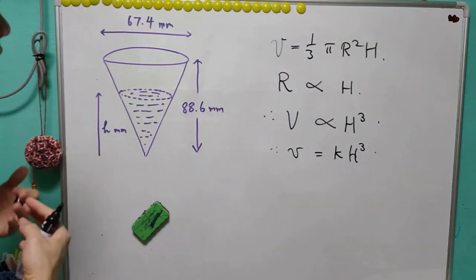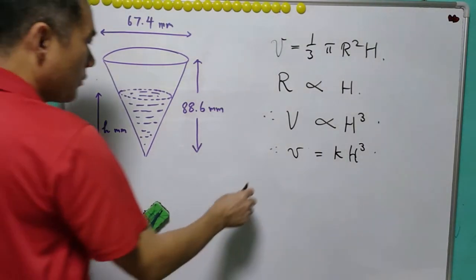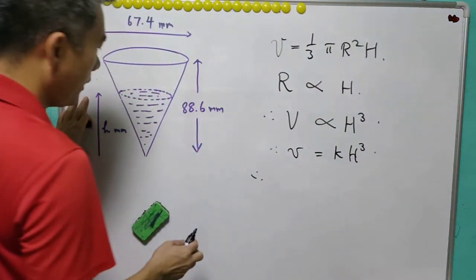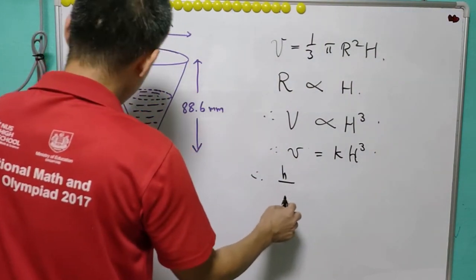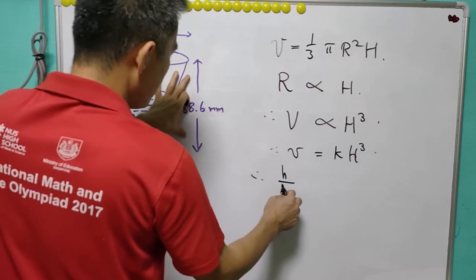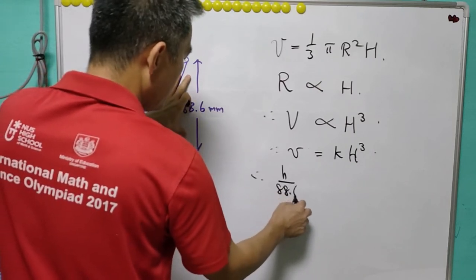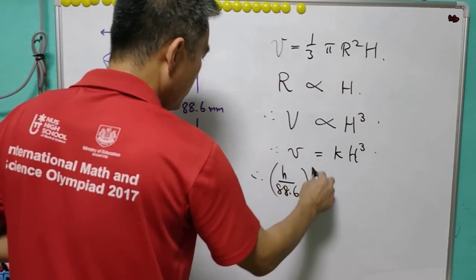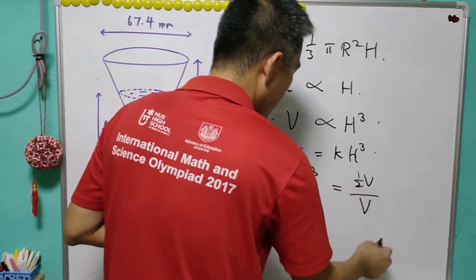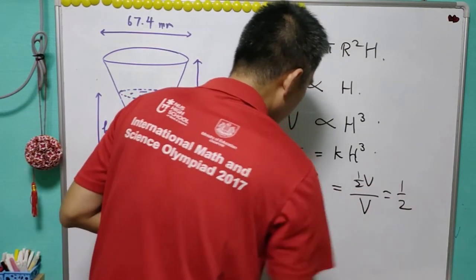If you want to get only half of the volume then we know that h over 88.6 to the power of 3 equals to half of v over v, which equals to half.